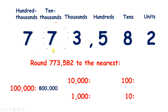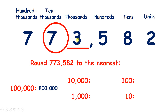Now rounding to the nearest 10,000, we find the place value, look next door — it's 3, so it's 4 or less, so we let that 7 rest. Look to the right, put zeros in sight — so that gives us 770,000.